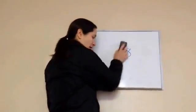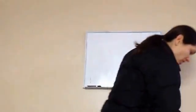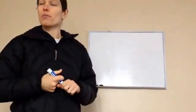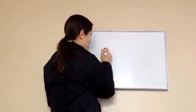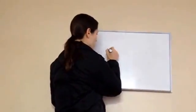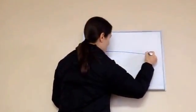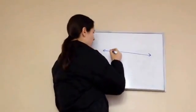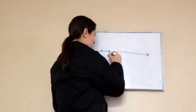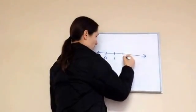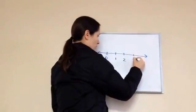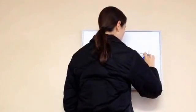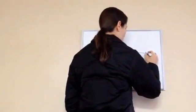Fifth grade lesson 38 is about fractions and mixed numbers on a number line. I want you to draw a number line with me. We're going to go from zero to four. Draw a line on your paper and mark zero, one, two, three, four. I'm going to make this a tad bit longer.